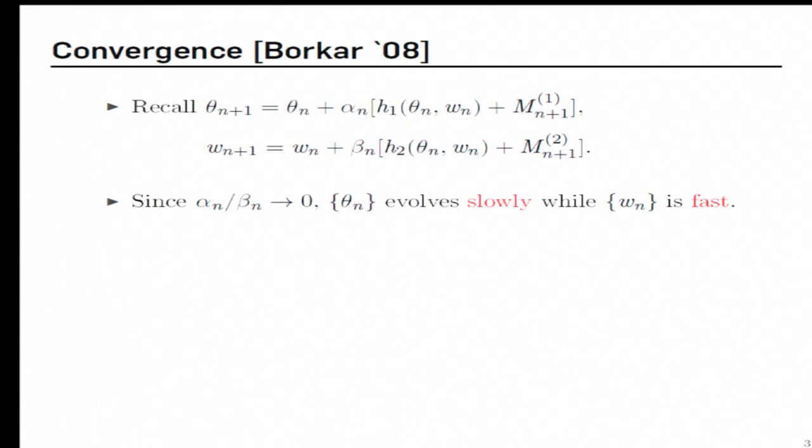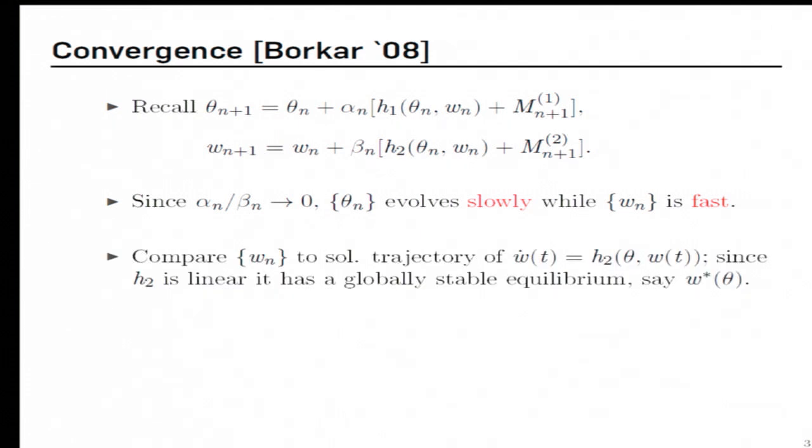So observe that these step-sizes multiply these terms in these brackets. So this implies that because alpha_N goes to zero much faster than beta_N, theta_N evolves very slowly as compared to w_N. That is why we refer to theta_N as the slow update, whereas we refer to w_N as the fast update. So the idea given in this book is to compare these two iterates with suitable solution trajectories of ODEs. This is what is the ODE method, and these are the details.